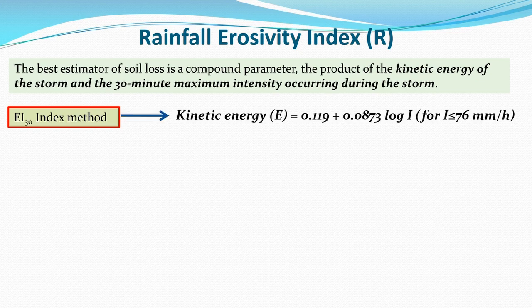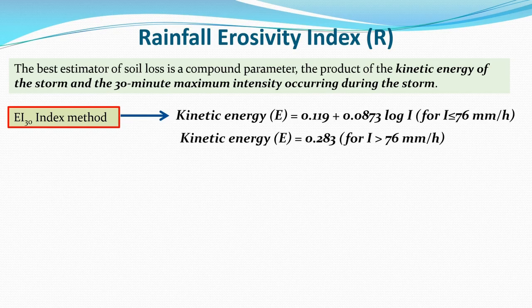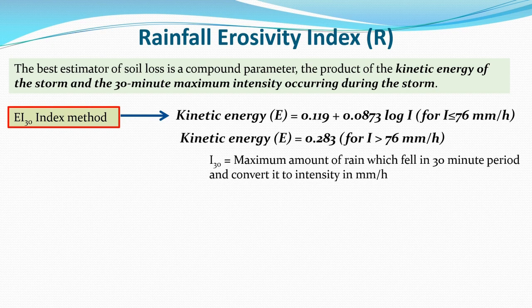In the EI₃₀ method, kinetic energy E = 0.119 + 0.0873 × log(i), where i is the intensity. This equation is applicable if the intensity is less than or equal to 76 mm/hr. If the intensity is more than that, the kinetic energy is directly taken as 0.283. I₃₀ is the maximum amount of rain which fell in 30 minutes, converted to intensity in mm/hr. EI₃₀ is the product of kinetic energy E and the intensity I₃₀.